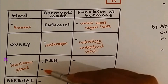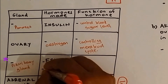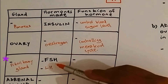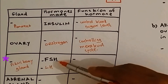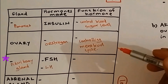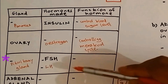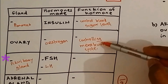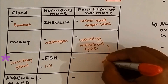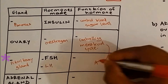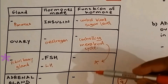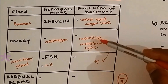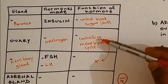The other hormone made from the pituitary gland is LH, which stands for luteinizing hormone. FSH stands for follicle stimulating hormone. The function of FSH and LH is the same as estrogen — to control the menstrual cycle. So estrogen, FSH, and LH all have the same function: controlling the menstrual cycle.